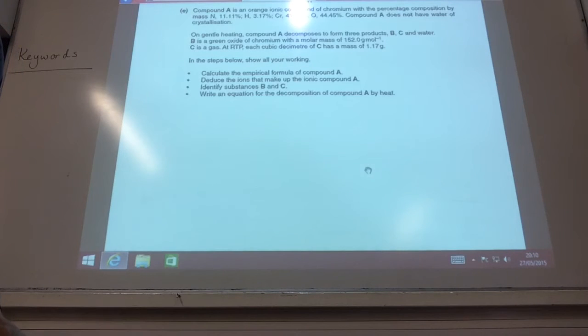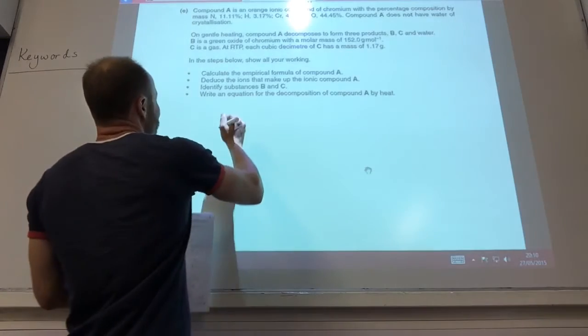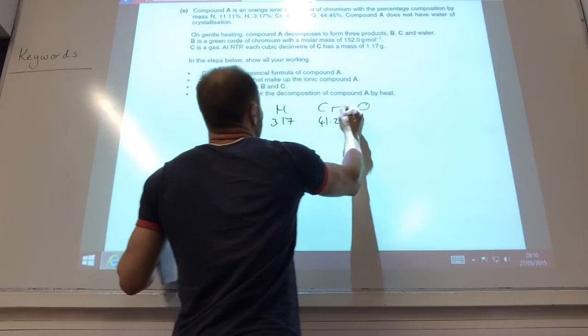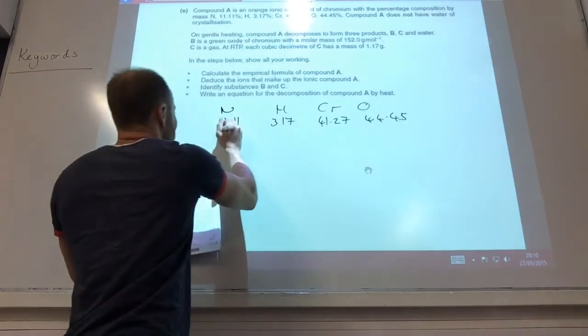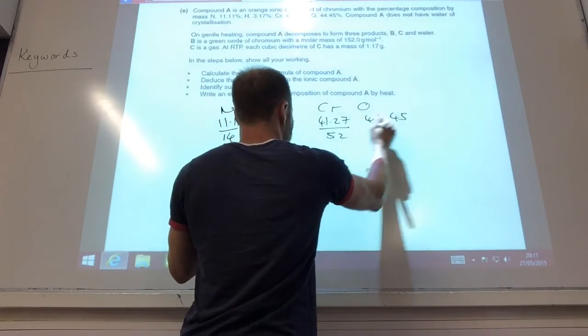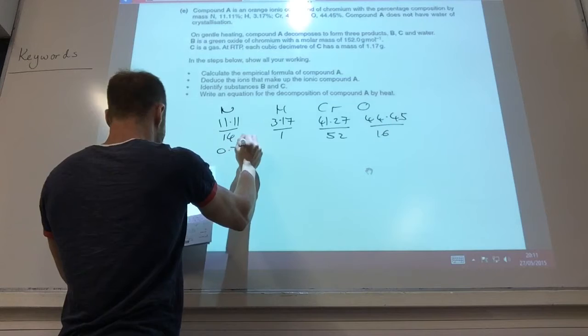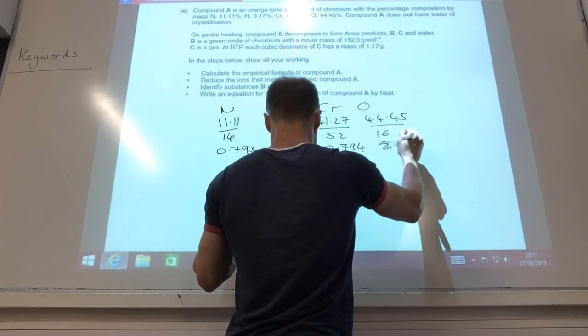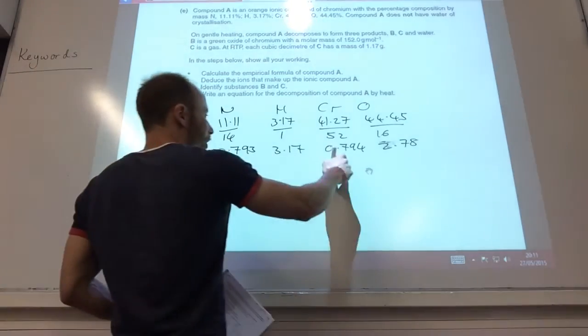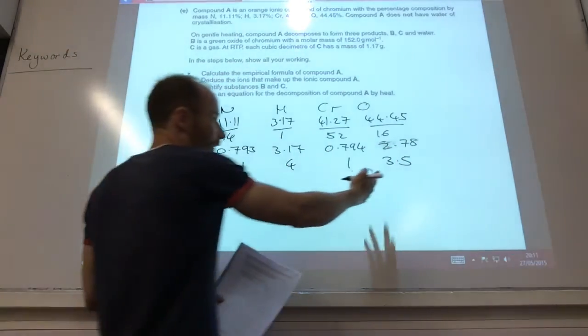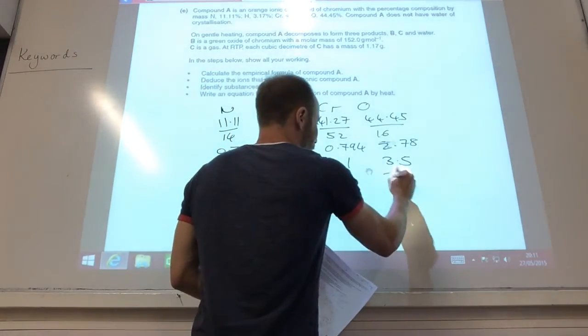Okay, so there's a lot of information on this question. It's actually not too bad. The first thing they want me to do is calculate the empirical formula, which you've been able to do for a long, long time now. So do your percentage masses, divide by your relative atomic mass, 14, 1, chromium is 52, oxygen is 16. That becomes 0.793, 3.17, 0.94, and 2.78. You divide by the smallest one. That becomes 1, that's 4, that's 1, and that's 3.5. And then remember, you can't have a formula with 3.5 in it, can you? So you have to times everything by 2 to give you that.